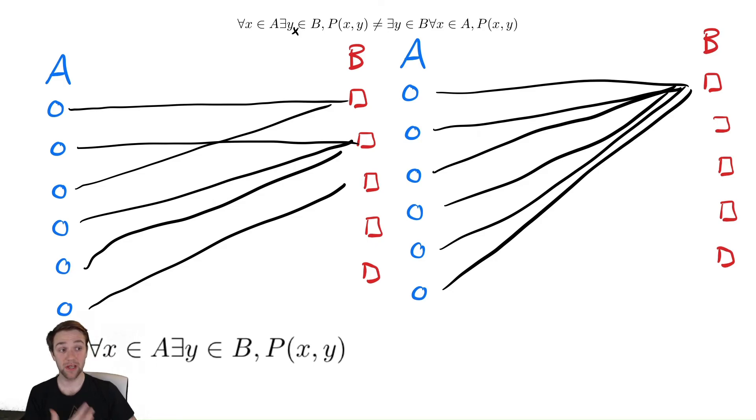As a result, the statement on the right is a stronger statement that there exists a Y such that irrespective of the X that you choose from A, you can find this connection. So in general, we say that the right hand side implies the left hand side because the right hand side is a stronger statement. The more important thing is that they are not the same because the left hand side implies that this Y might depend upon X in some way, and the right hand side does not have any such requirement.